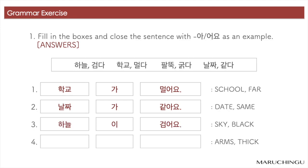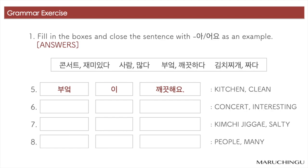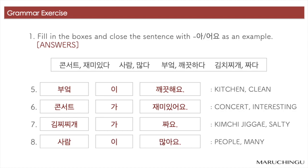3번. 하늘이 검어요. 4번. 팔뚝이 굵어요. 5번. 부엌이 깨끗해요. 6번. 콘서트가 재미있어요. 7번. 김치찌개가 짜요. 8번. 사람이 많아요.